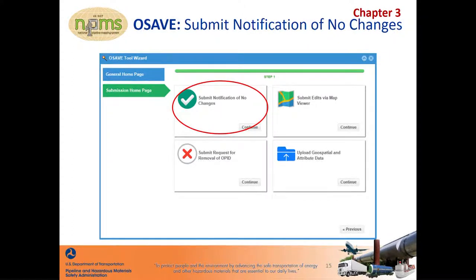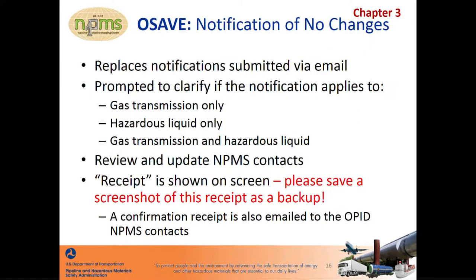First, we're going to talk about submitting a notification of no changes. This notification may be submitted in lieu of a traditional data submission and replaces the need to send an email to NPMS staff. Through this workflow, you'll first be prompted to record what NPMS-related pipelines the OPID operates. If the OPID operates both gas transmission and hazardous liquid pipelines, you'll be prompted to clarify if the notification applies to only the gas portion, only the liquid portion, or both.